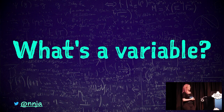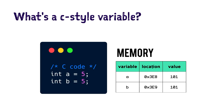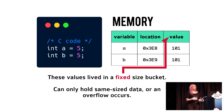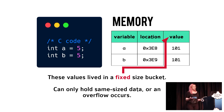To really understand how memory management works in Python, we need to get a little philosophical and ask ourselves: what's a variable? Here in this example, we have a C-style variable. We have two variables, A and B. We're setting the value of both to the number 5 — that's 101 in binary. We need to declare the type of the variable before assignment. We have to say int A equals 5, because those C-style values live in a fixed-sized bucket.